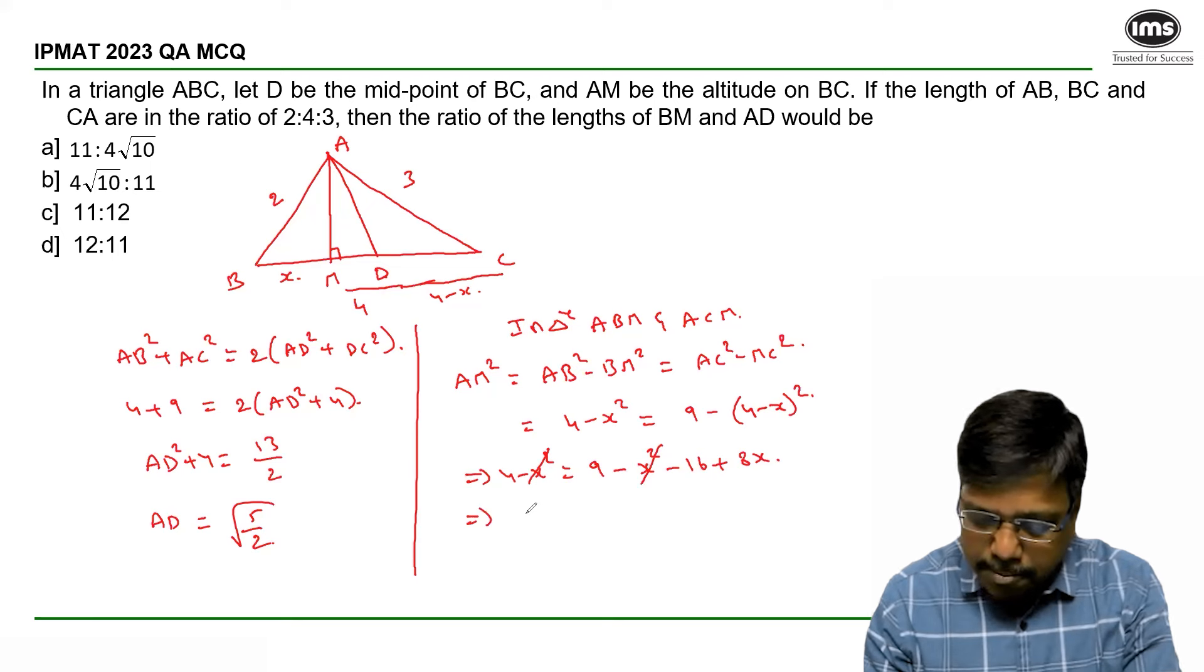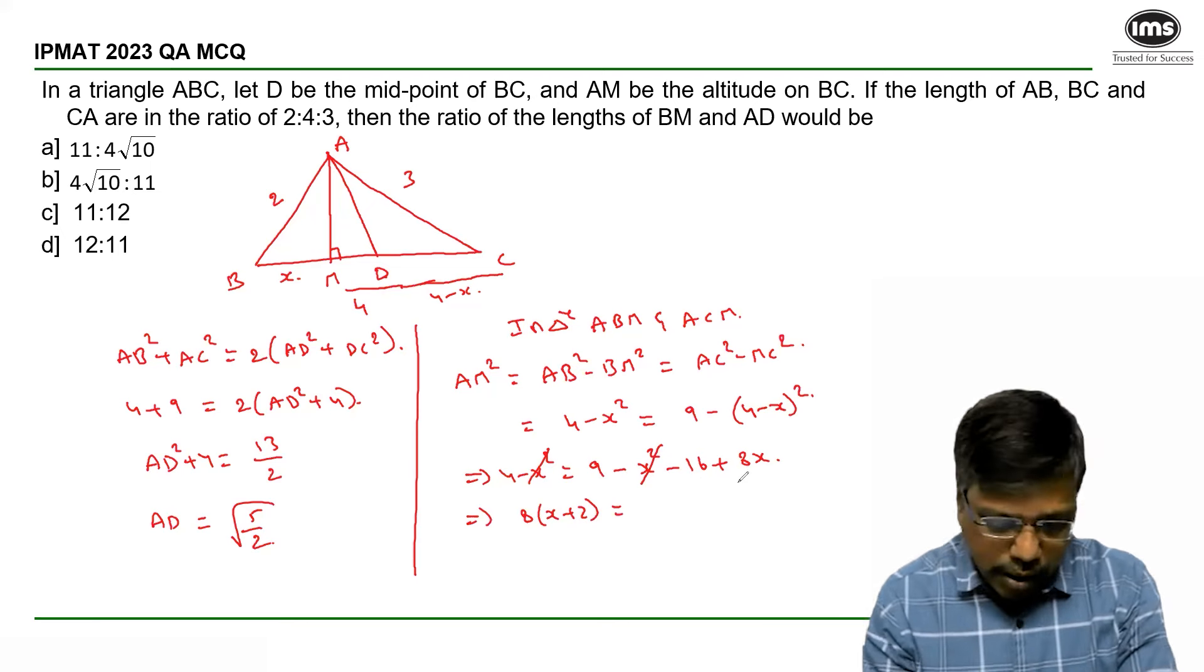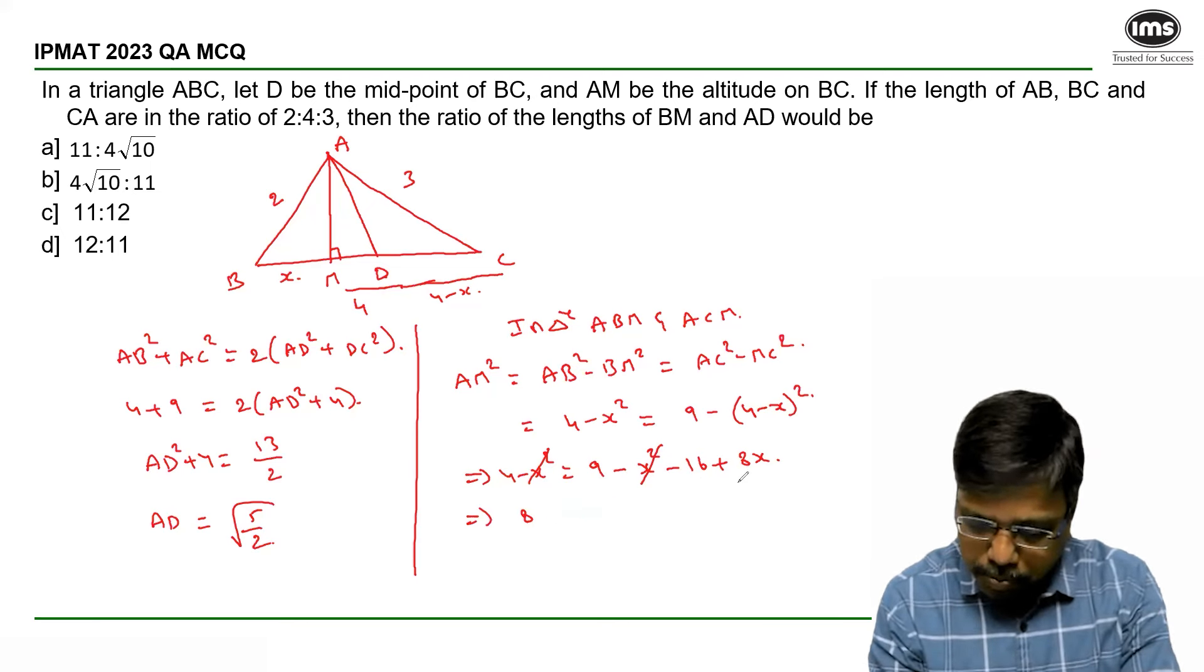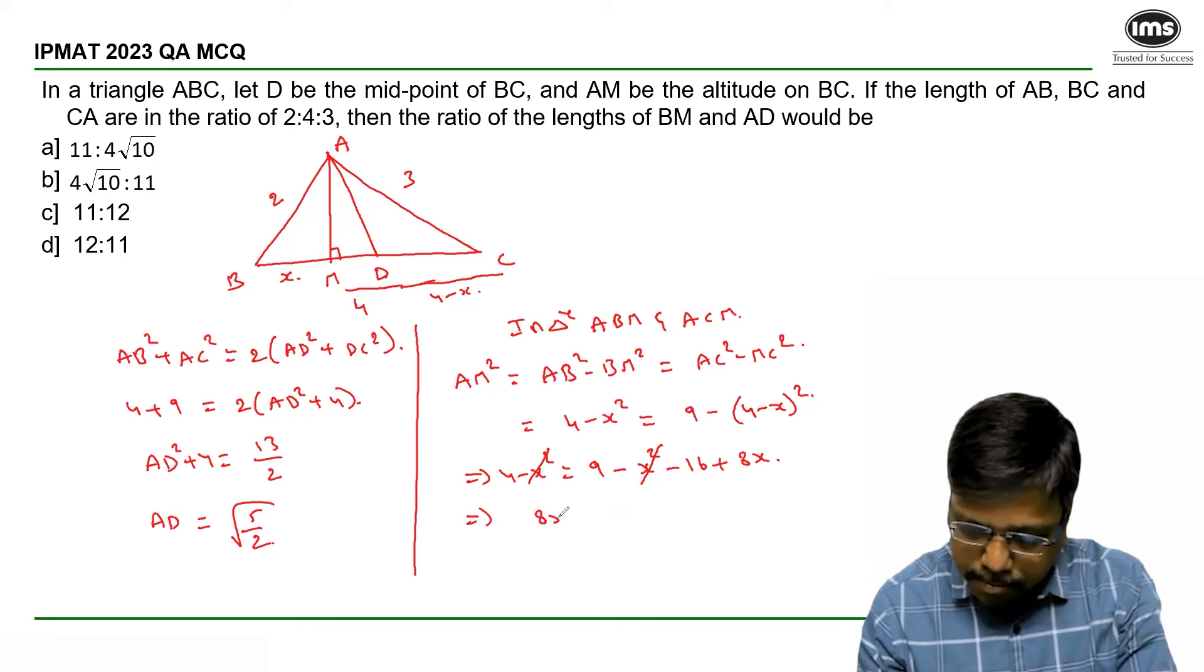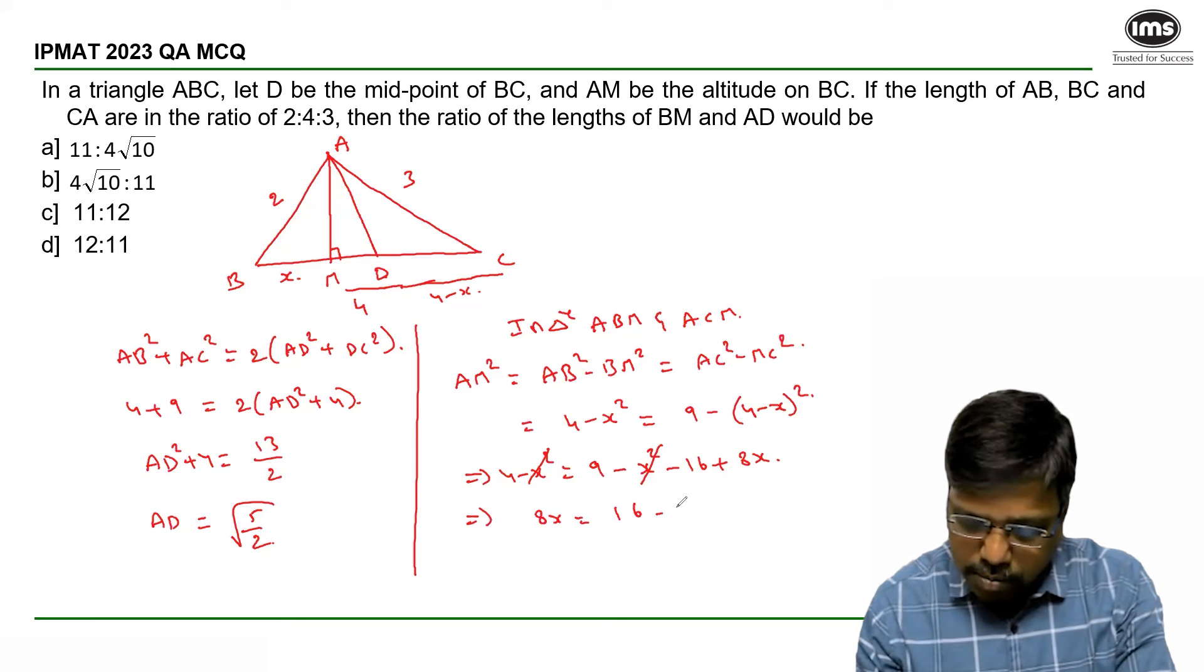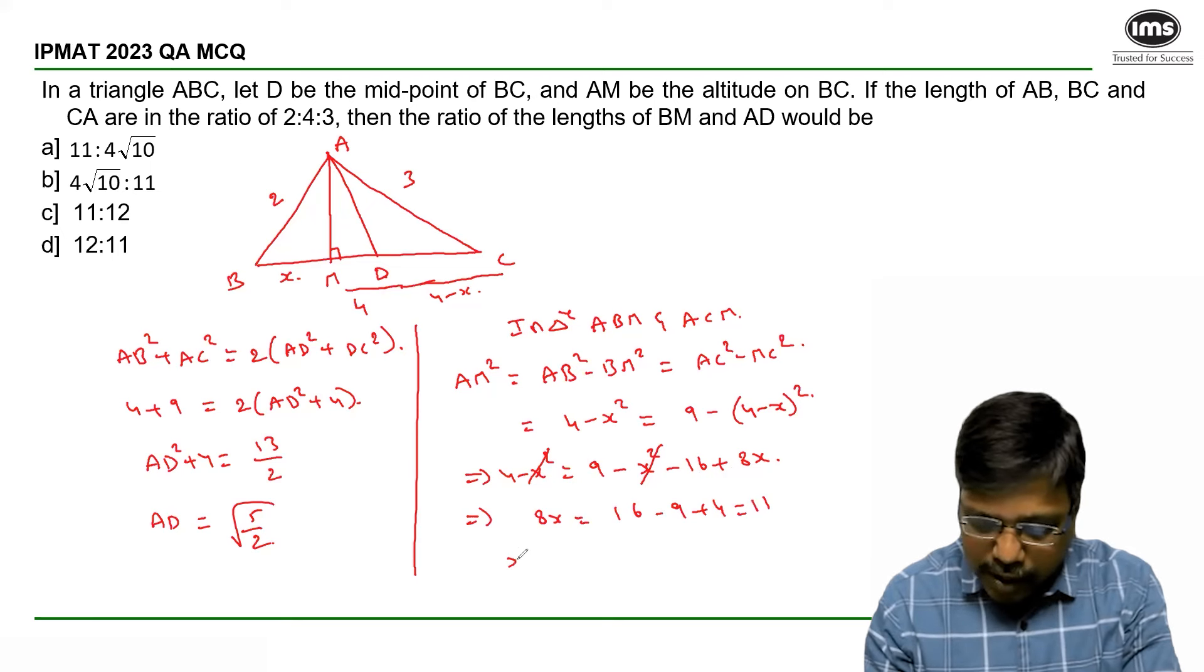So 8x = 9 - 4 + 16, which equals 11. Therefore x = 11/8.